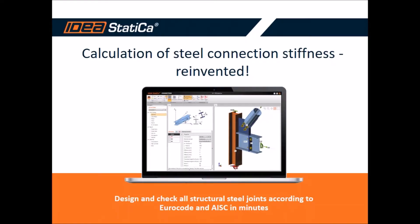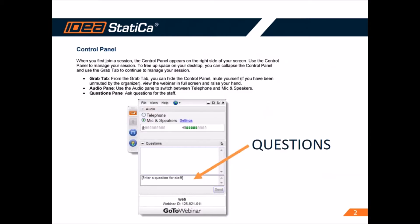Hello everybody, thank you for joining us today and welcome to today's webinar: Calculation of Steel Connection Stiffness. We are using GoToWebinar. You can see a panel on the right which will help you set audio settings and enter questions into the message window. You are in listen-only mode, so please use the chat window when you have any questions — you can submit any question at any time during the presentation. We will answer questions after the practical session.